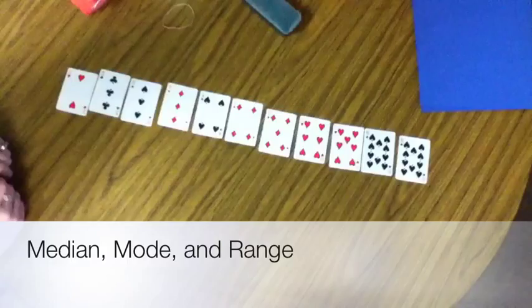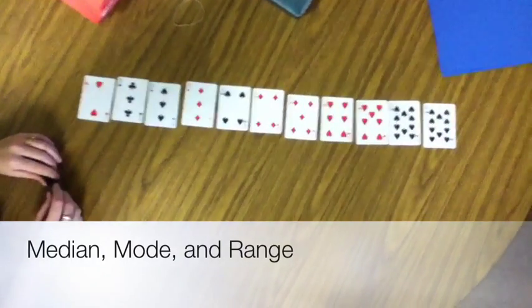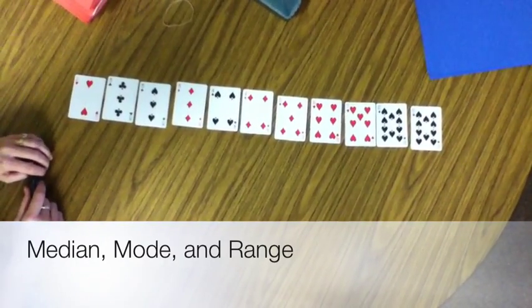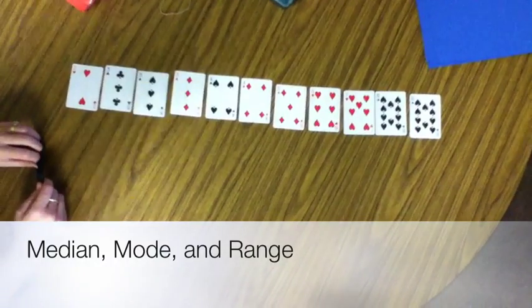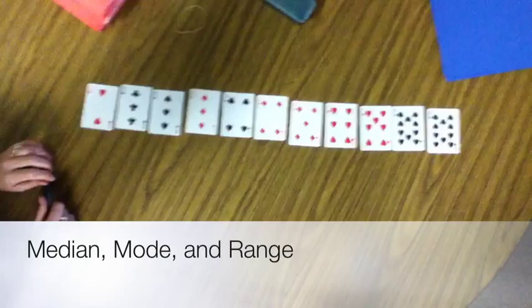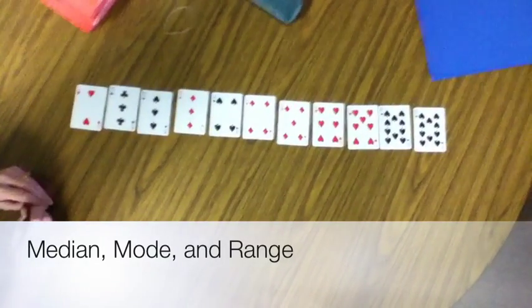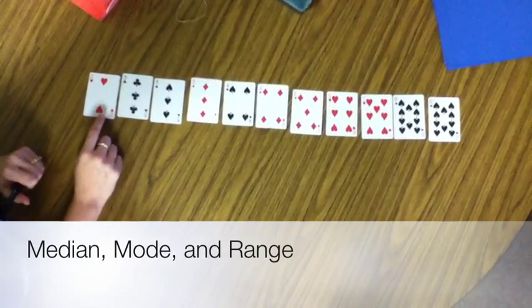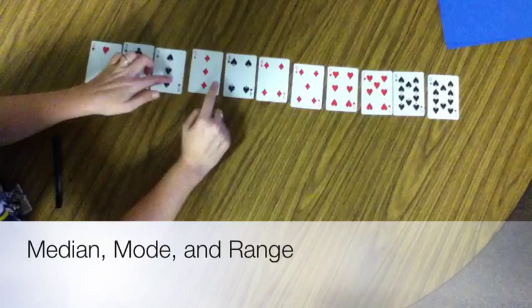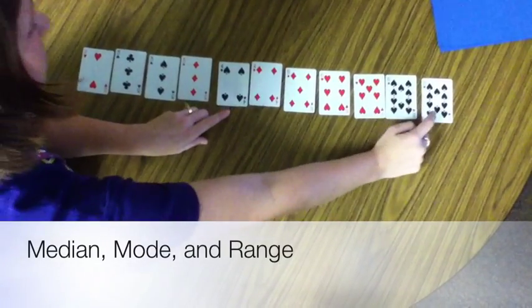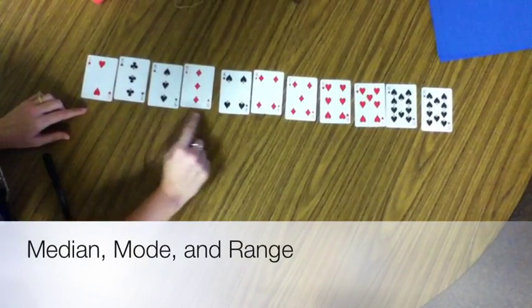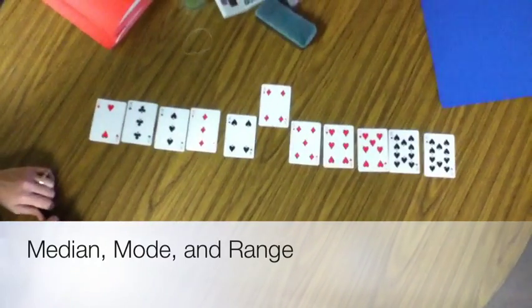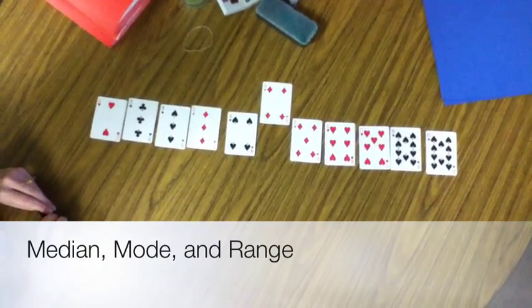So we've done range, the distance from the lowest to the highest. We've done mode, the one that occurs most often. Now let's do median. Median's kind of tricky. What do you think median stands for? Middle. Why do you think middle? Because you can't drive on the median in the middle of the road. There you go. The median's the one in the middle. So how would you find the data that's right in the middle? Count. So I go one, two, three, four, five in. One, two, three, four, five in. That has to be the middle. So four is your median. Very good. That's a great way to do it. So what's our median then? Four.